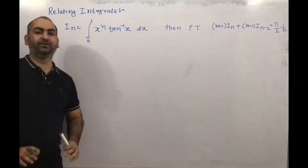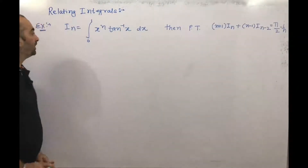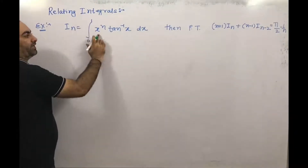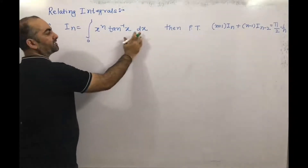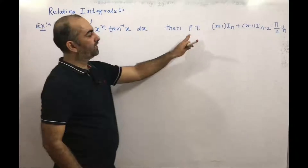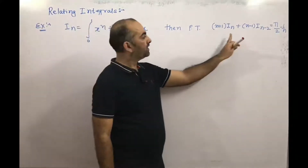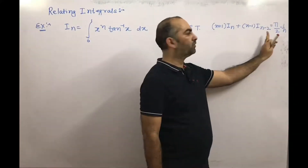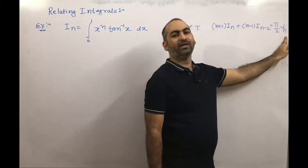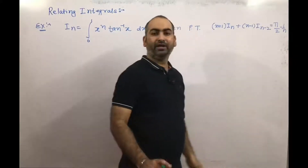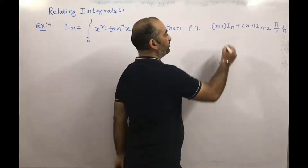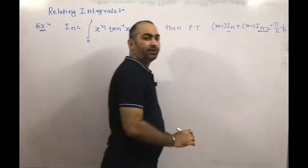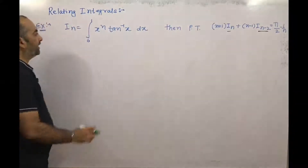Now we discuss the first problem. Given In = integral from 0 to 1 of x^n times tan⁻¹(x) dx, prove that (n+1)In + (n-1)I(n-2) = π/2 - 1/n. Here we can see we have to find the relation between In and I(n-2).